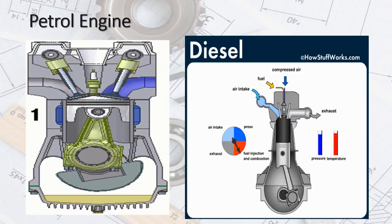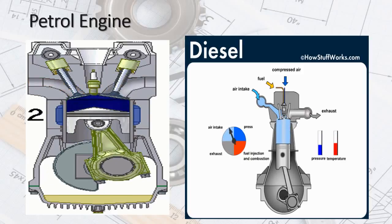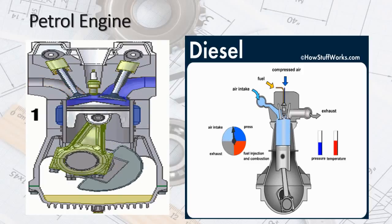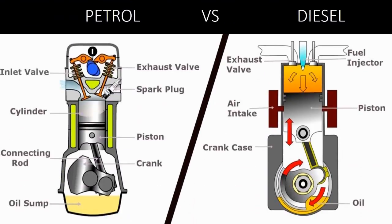Spark ignition gasoline and compression ignition diesel engines differ in how they supply and ignite the fuel. In a spark ignition engine, the fuel is mixed with air and inducted into the cylinder during the intake process. After the piston compresses the fuel-air mixture, the spark ignites it, causing combustion, and the expansion of combustion gases pushes the piston during the power stroke. In a diesel engine, only air is inducted and compressed; the engine then sprays fuel into the hot compressed air at a measured rate, causing it to ignite.